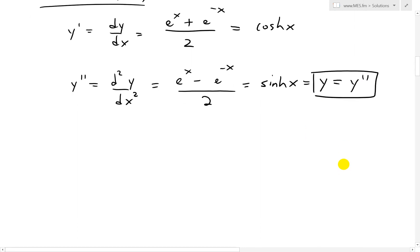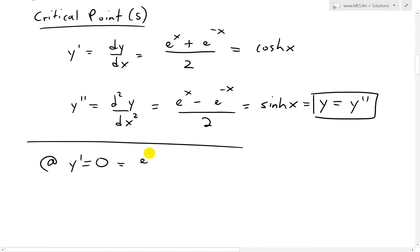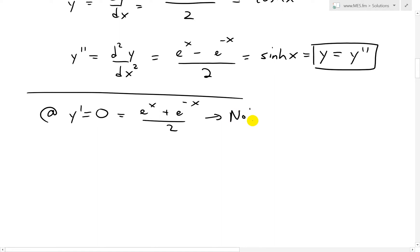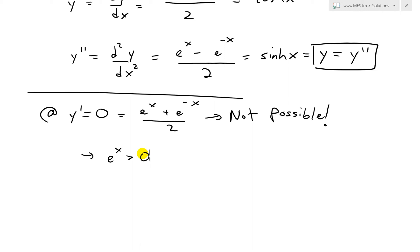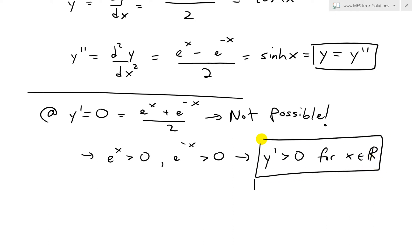Usually we find critical points by setting y prime equal to zero. But y prime equals e to the x plus e to the negative x over 2, and this is actually not possible because everything is positive. Since e to the x is always greater than zero, and e to the negative x is always greater than zero, we have y prime is greater than zero for all real numbers x. So sinh of x is always increasing.